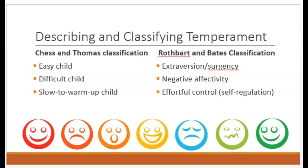A difficult child tends to react negatively and cries frequently, engages in irregular daily routines, and is slow to accept change. It's harder to predict what they will need and when, and things are emotionally rough when you need to make any changes to the daily routine.